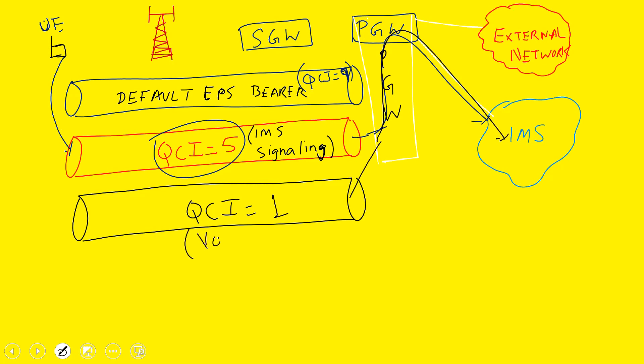QCI1 is used to carry voice traffic — any traffic sent by the IMS network, in this case voice data. If you are on a voice call for the next five minutes, the QCI1 bearer will remain established for that duration.